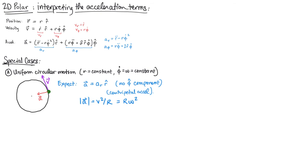Let's work through this using our expression for the acceleration subject to the constraints that r is constant and phi dot is constant. The meaning of r equals a constant is that r dot is zero and r double dot is zero — we have a constant distance from the origin that's not changing. The consequence of phi dot being constant is that the second derivative of phi is zero, so there's no angular acceleration.